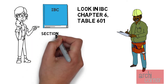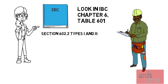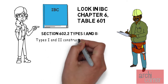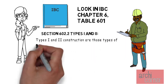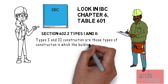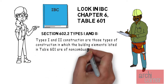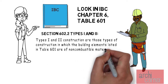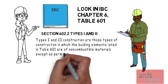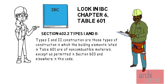If you look at section 602.2 you will find something interesting. Type 1 and type 2 construction have the same exact requirement when it comes to specific building elements. This section states that type 1 and 2 construction are those types of construction in which the building elements listed in table 601 are of non-combustible materials, except as permitted in section 603 and elsewhere in this code.